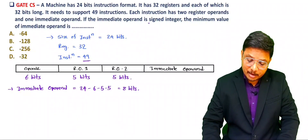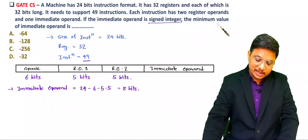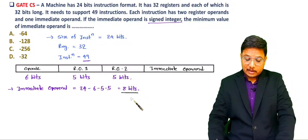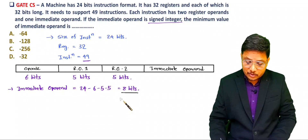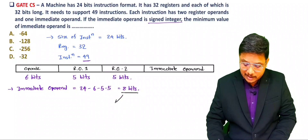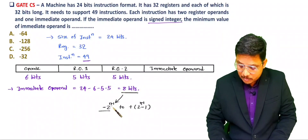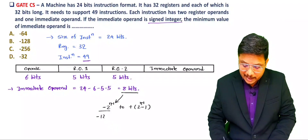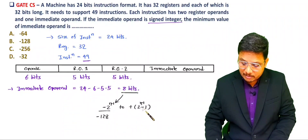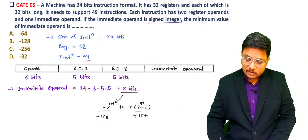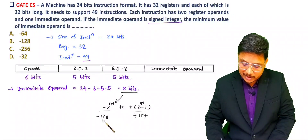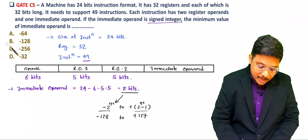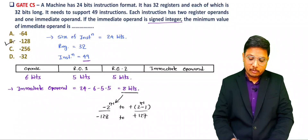The immediate operand is a signed number. For 8 bits the range of a signed number is minus 2 to the power 7 to plus 2 to the power 7 minus 1, meaning from minus 128 to plus 127. So the minimum value of the immediate operand is minus 128.